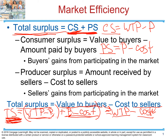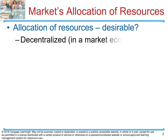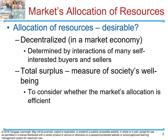Remember: consumer surplus is the benefit the customer gets from participating in the market, and producer surplus is the benefit the seller gets from participating in the market. Total surplus is the combined gain from both buyers and sellers participating together. Now we need to ask: in what situation is total surplus going to be maximized? What condition do we need in the market for total surplus to be the highest?